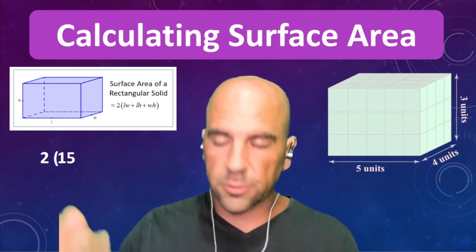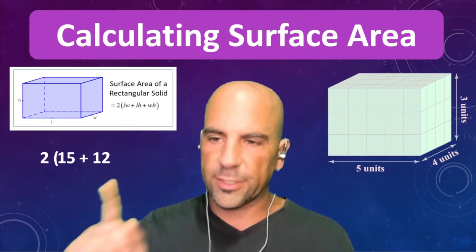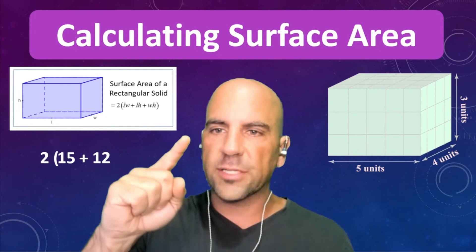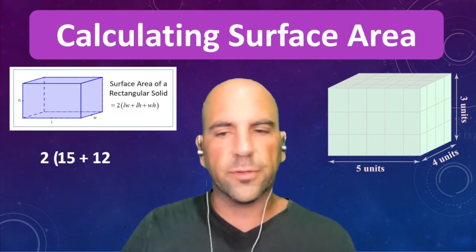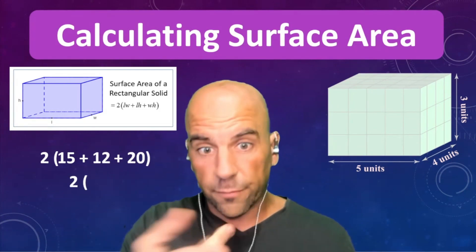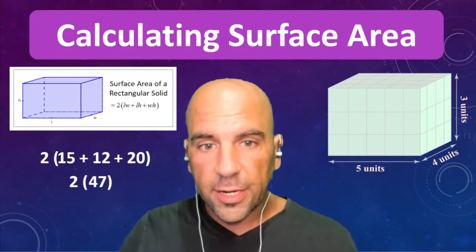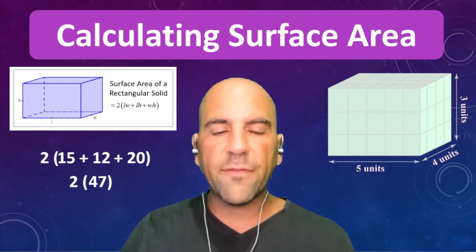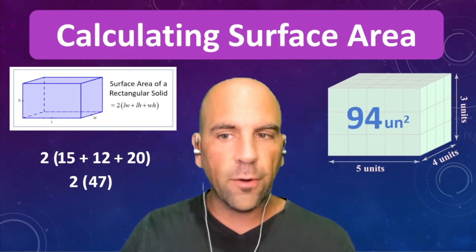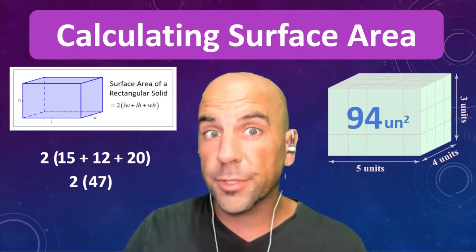The two sides from our perspective: four times three, we're going to add 12. And finally, the top and the bottom — that's five by four, so that's going to be 20. Add these up — two times. Add those up, it is 47. Two times 47 is 94. And don't forget to add on units squared.